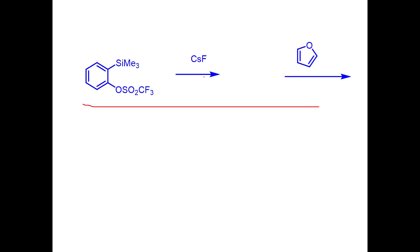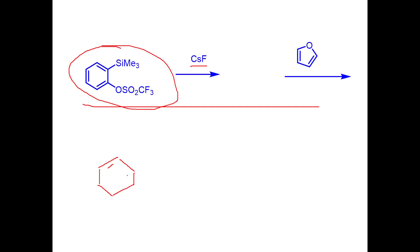The next question looks odd but is pretty simple. Cesium fluoride added to a particular compound gives benzyne. This is a very popular reaction used a lot in synthetic organic chemistry. Cesium fluoride can dissociate into Cs⁺ and F⁻.